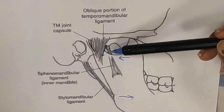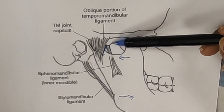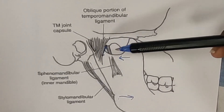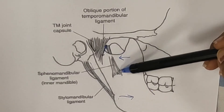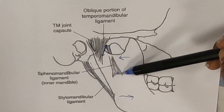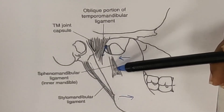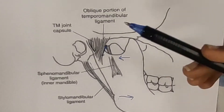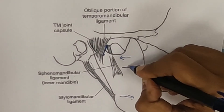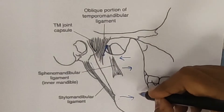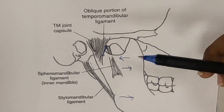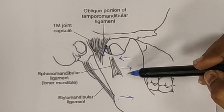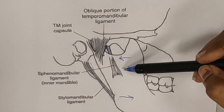Other than that, you have a smaller ligament which is the sphenomandibular ligament. It arises from the spine of the sphenoid bone and is attached to the ramus of the mandible. Its orientation is such that it checks both anterior movement and also inferior — downward — movement of the mandible.